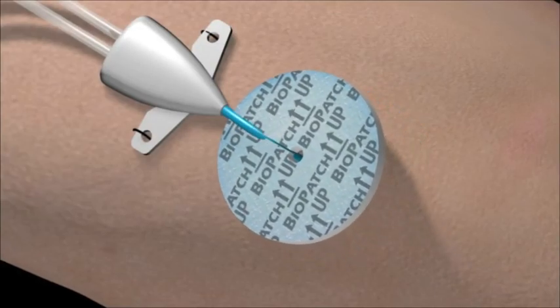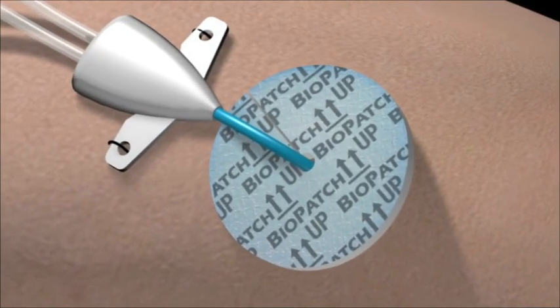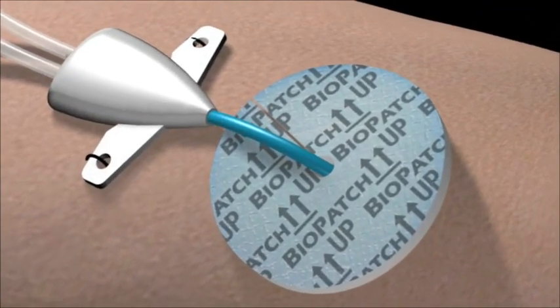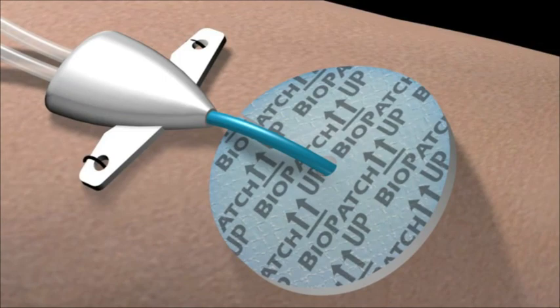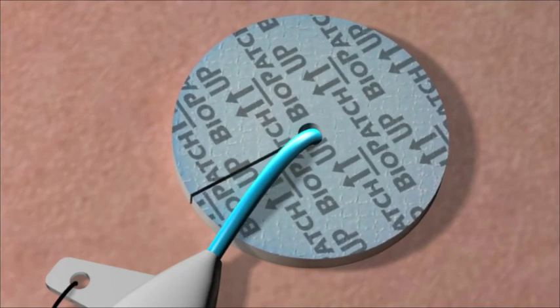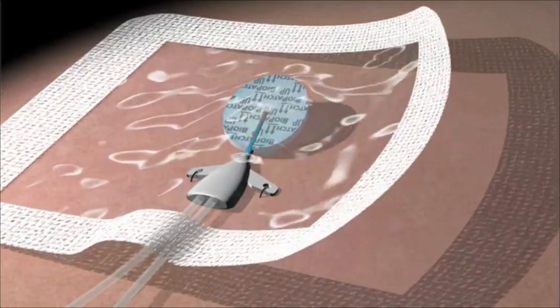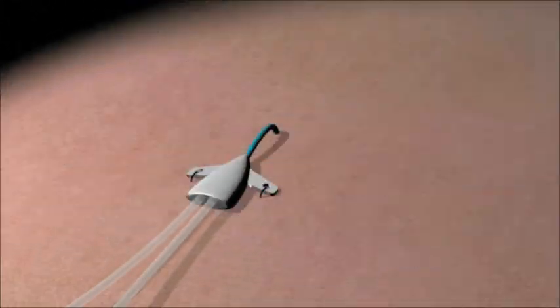Place BioPatch around the catheter or pin site with the CHG impregnated white foam side in direct contact with the patient's skin. Make sure that the BioPatch is not laying on top of the catheter hub. When aligned properly, the pre-cut slit allows for easy release of the catheter when the transparent film dressing and BioPatch are removed.